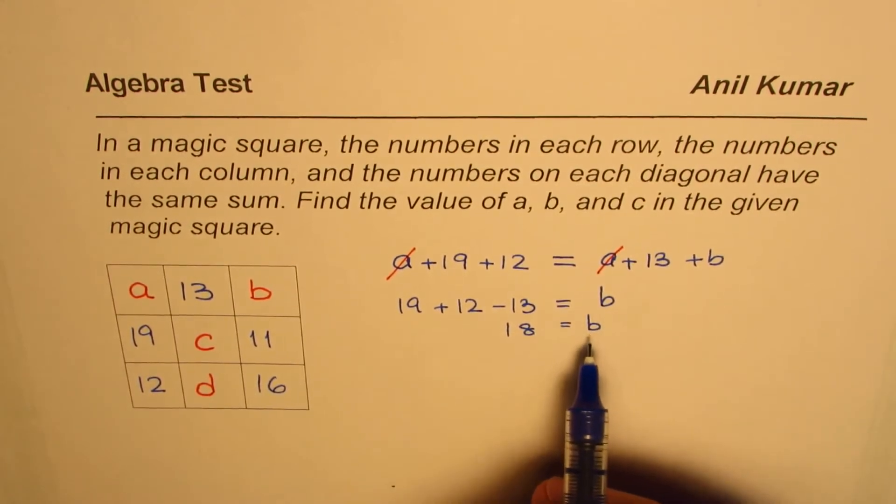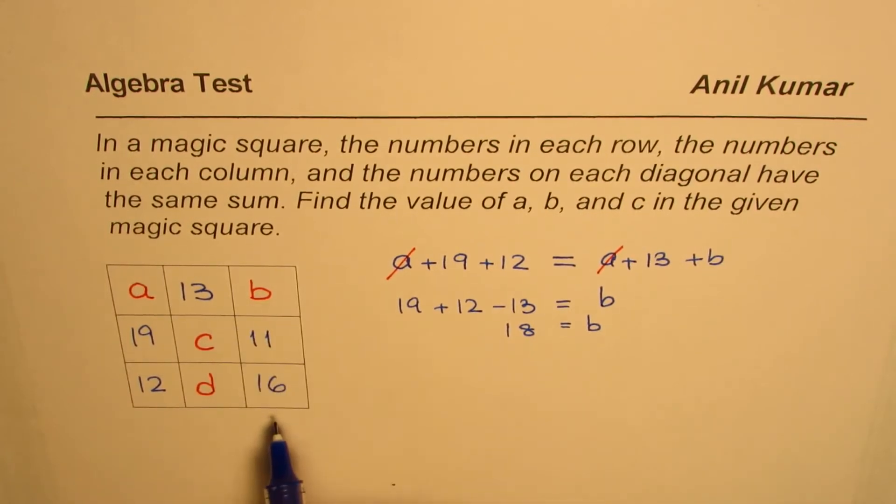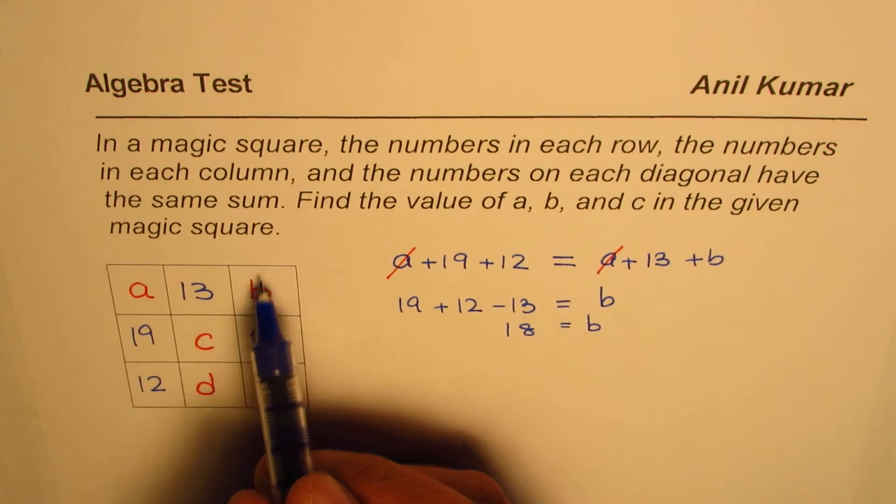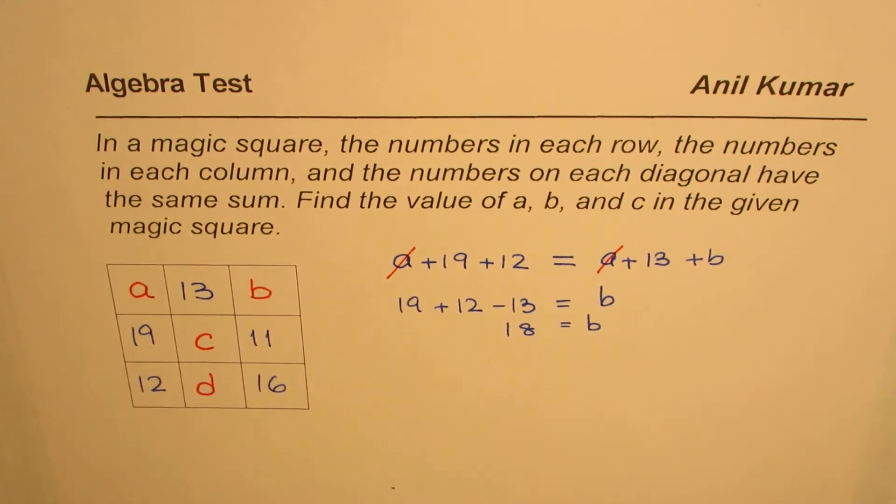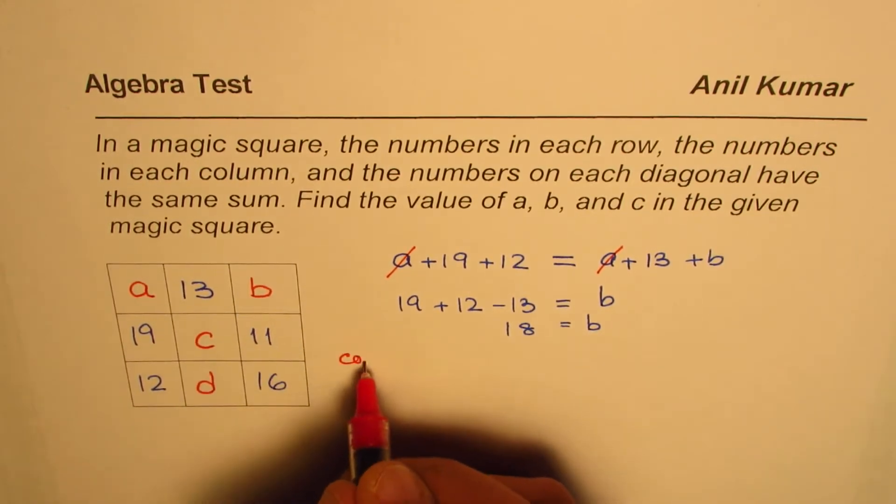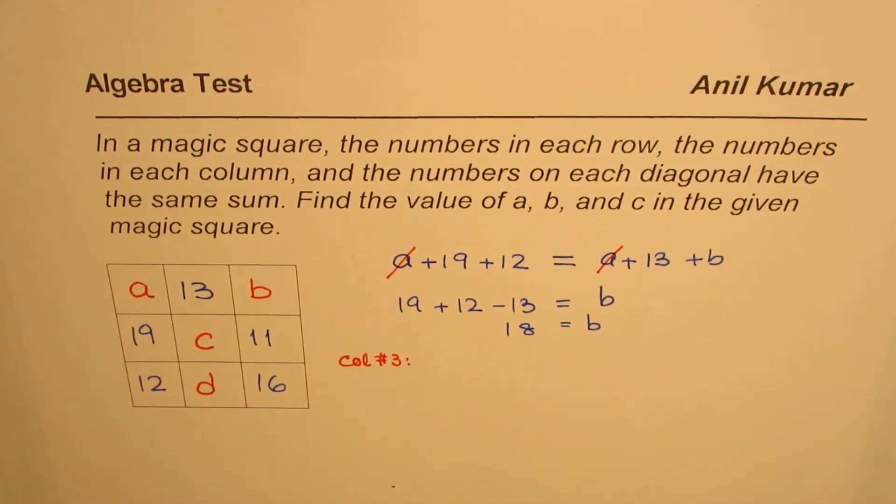Once we have the value of B, we can find the sum of rows and columns. So now let us look into column 3. Let me write down here on the side. Now column number 3, let us find the sum of this column.